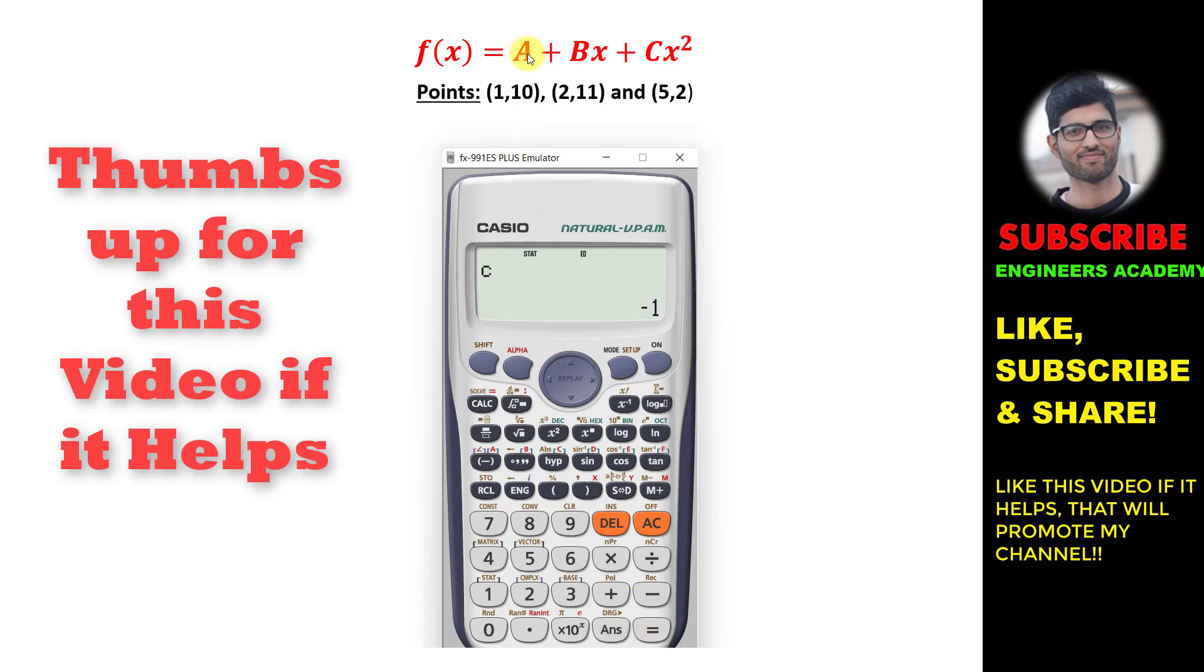So A is 7, B is 4, C is minus 1. We got the values of A, B, and C, and that gives us the function of a parabola which passes through these three given points.